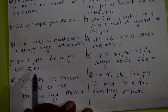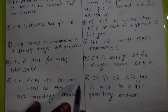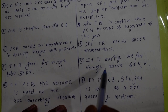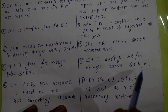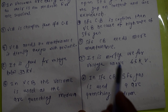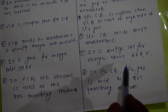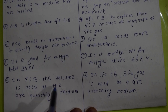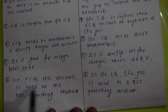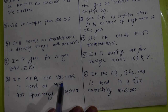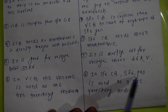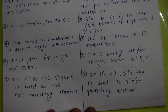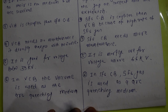The voltage level for vacuum circuit breakers is below 33 kV, while SF6 circuit breakers are used above 66 kV, meaning SF6 is suited for higher voltage applications. Vacuum is used as the arc quenching medium in vacuum circuit breakers, while SF6 gas is used as the arc quenching medium in SF6 circuit breakers.